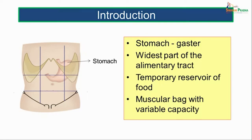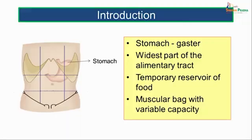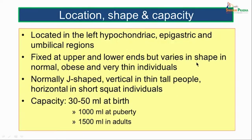The stomach, also known as the gaster, from which we derive the adjective gastric, is the widest part of the alimentary tract. It is a temporary reservoir of food and a muscular bag with variable capacity. What we see here are the various regions of the abdomen. The stomach is situated majorly in the left hypochondriac region, epigastric region, and the umbilical region.